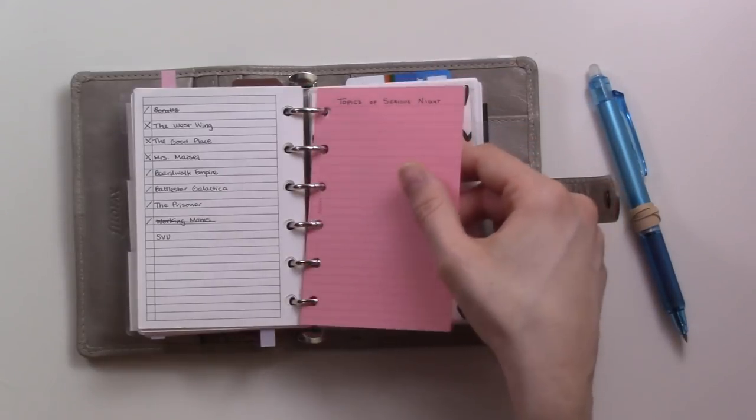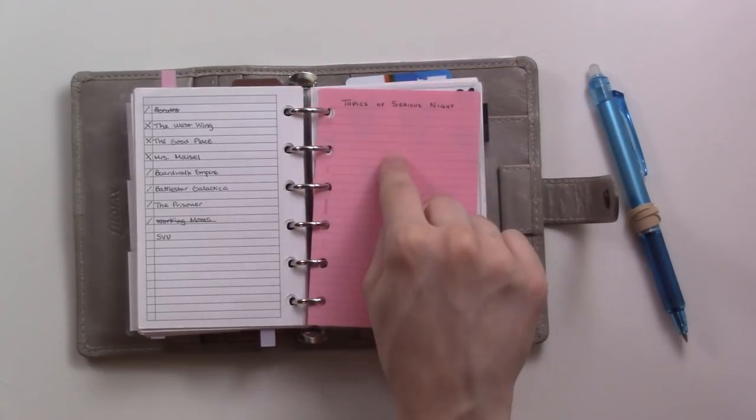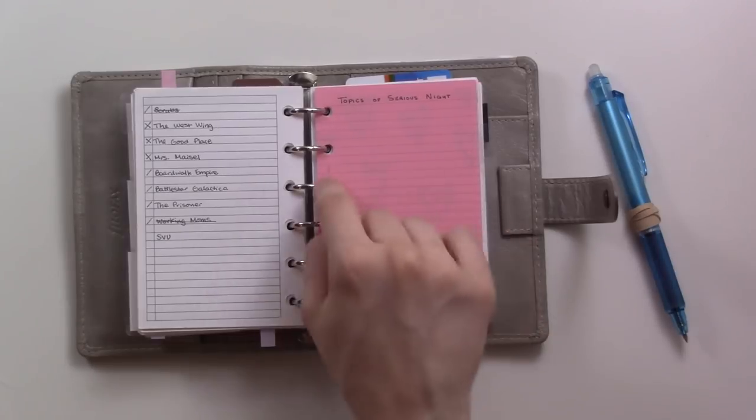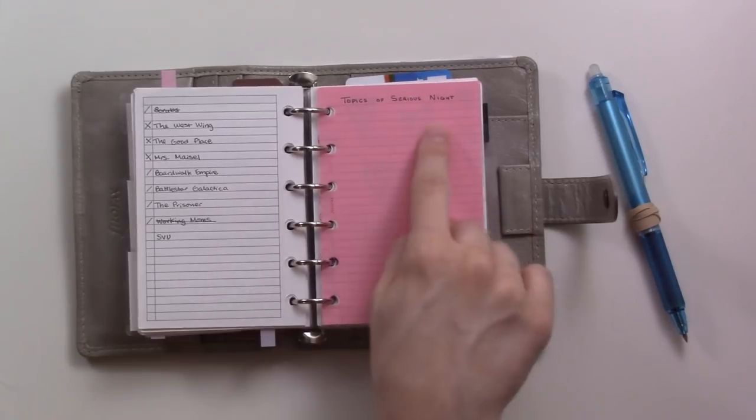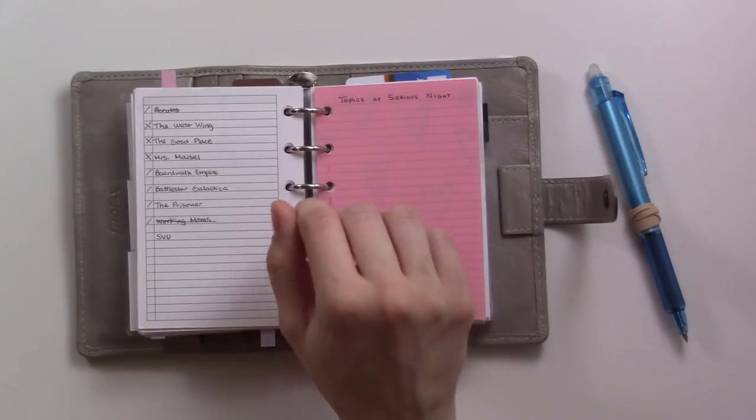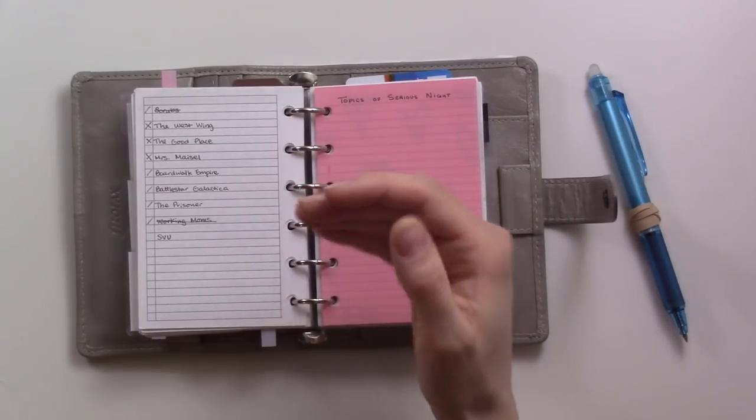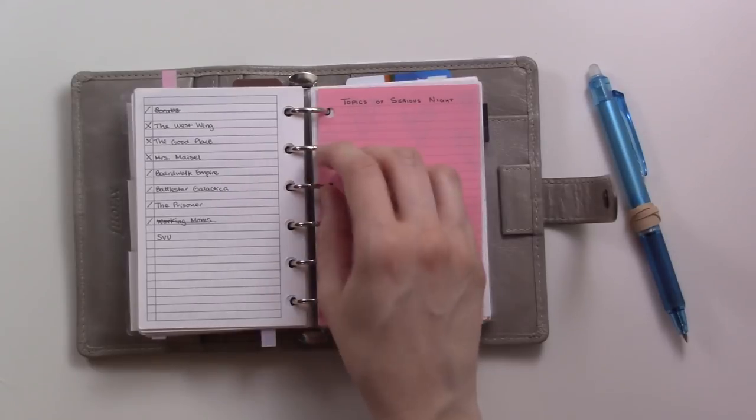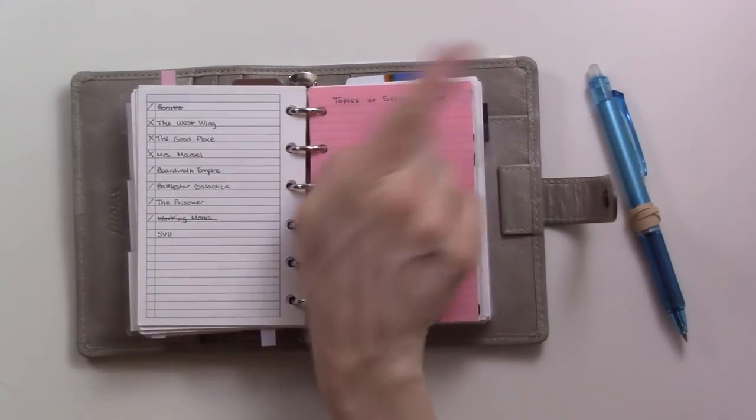I filled up the last of these, but this is where I write down things that I want to talk to my husband about, things that are difficult to talk about that I need to work out in my head, things that we need to have an argument about or things we just need to have like a serious night where we're like having a family meeting about. I did a whole video about that as well.